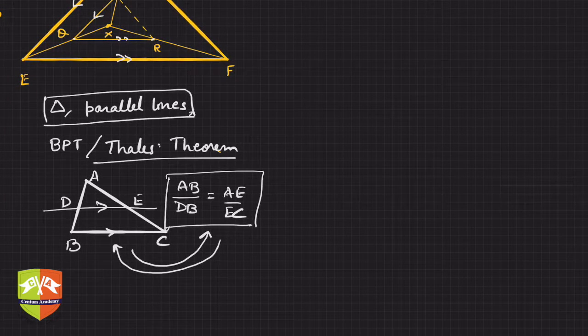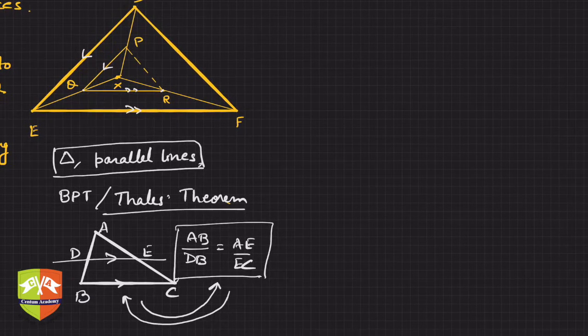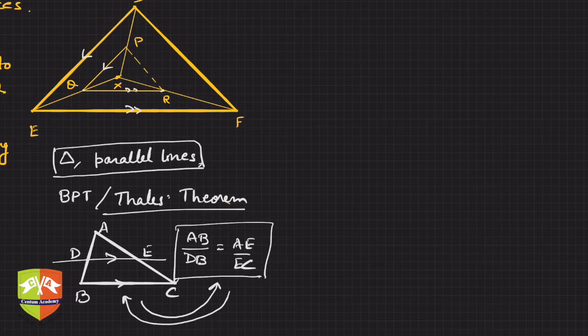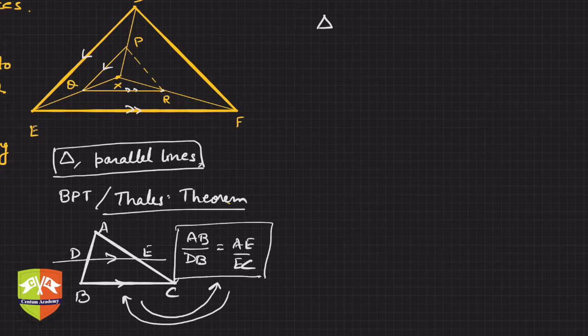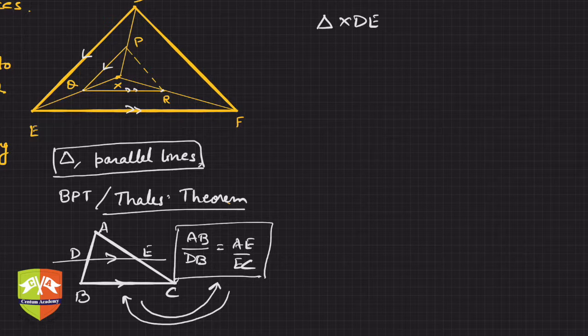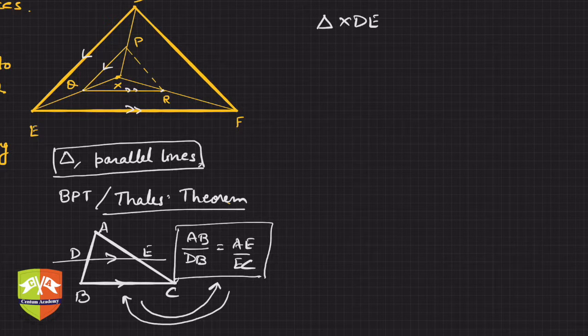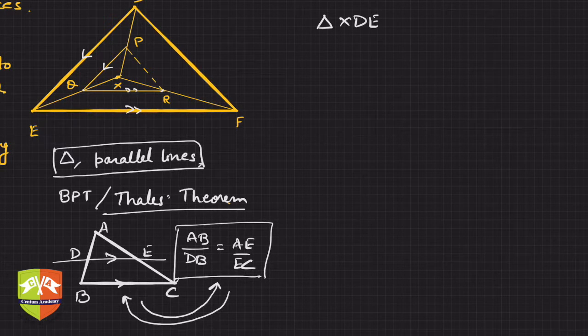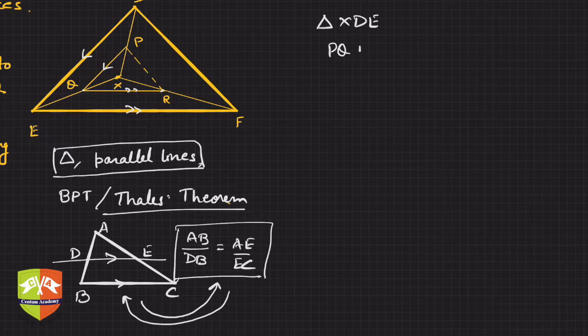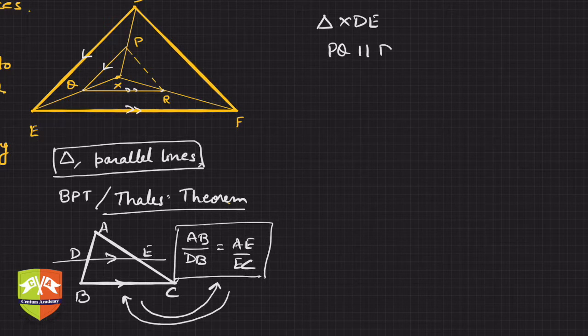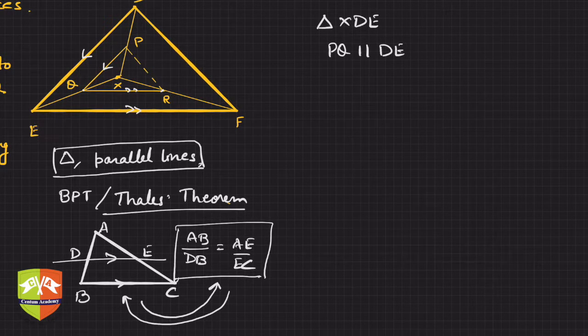Now consider triangle XDE. This is a triangle where you see there are two lines parallel. What are the parallel lines? PQ is parallel to DE. So what can we write about it?